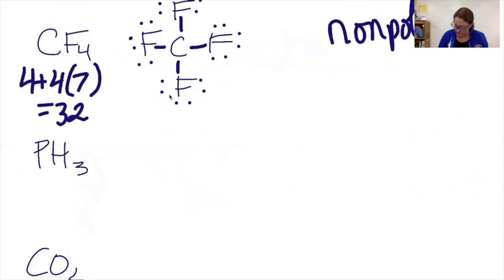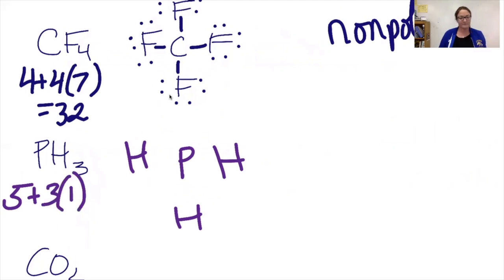Let's take a look at PH3 as an example. Phosphorus is going to go in the middle and the hydrogens are going to go around. Phosphorus has five valence electrons, each hydrogen has one. I'm going to make this with eight electrons. The last two go there. Since I have lone pairs on the central atom, it is going to be a polar molecule.